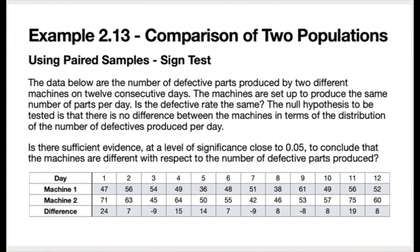We'll start with an example comparing two populations using paired samples, beginning with the sign test. The data are the number of defective parts produced by two different machines on 12 consecutive days. The machines are set up to produce the same number of parts per day. The question is whether the defective rate is the same. The null hypothesis is that there is no difference between the two machines in terms of the distribution of defectives produced per day. We have the number of defective parts for both machines across 12 days, along with the differences — machine 2 minus machine 1.